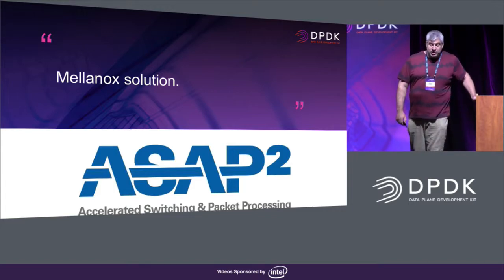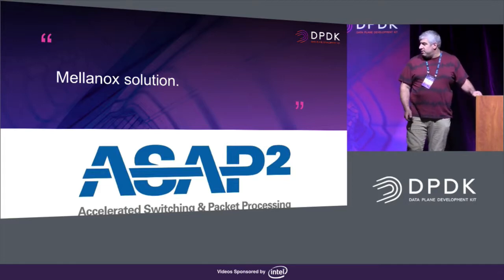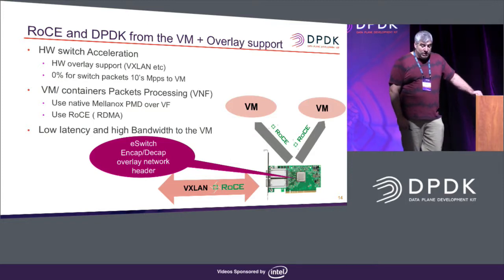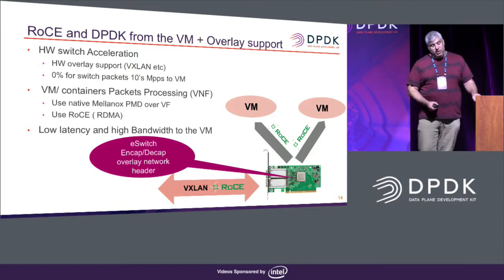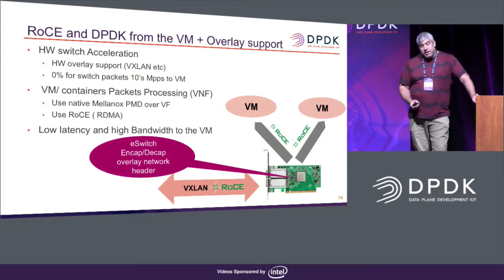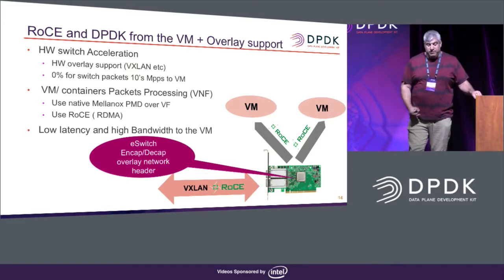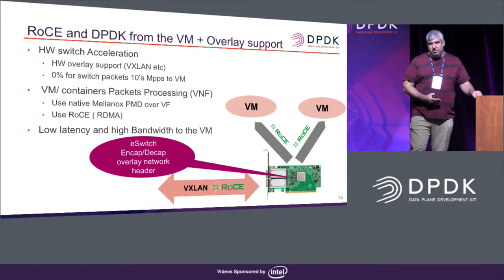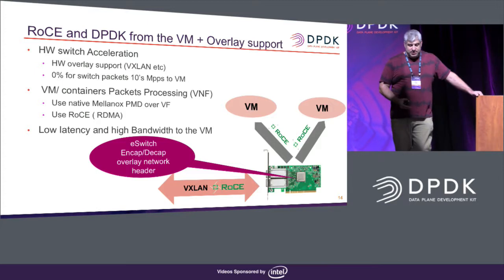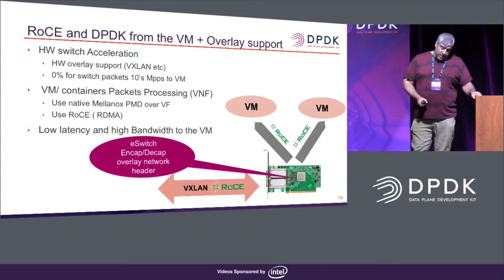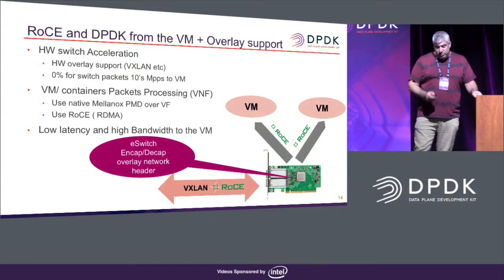Just about the Mellanox solution: in Mellanox we call it A-squared, meaning accelerate switch and packet processing. What we're trying to achieve is not just a virtual interface — that's the difference. It can be used to accelerate virtual interfaces, but it can be more than that. Two things we're trying to achieve: a virtual function can run RoCE traffic — that's Remote RDMA coming from InfiniBand that also works over Ethernet. And if you want to run your own VNF using the acceleration of a vendor PMD and not just a virtual PMD without hardware acceleration, that's the motivation to use SR-IOV.